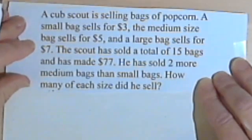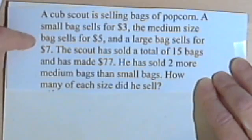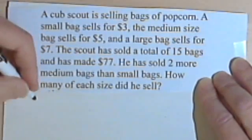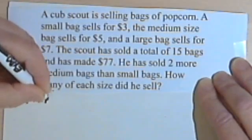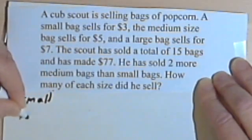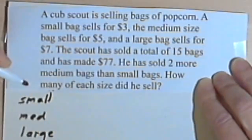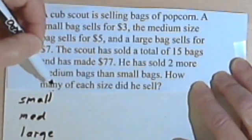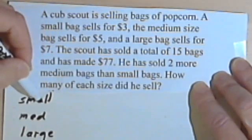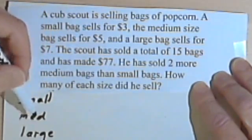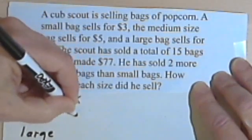Let's copy out the important information so we have it all in one place and don't have to search through the paragraph for it. So we know there are three sizes: small, medium, and large. And the question is asking how many of each size did he sell? Well, if we're looking for the numbers of bags of each size, let's get some variables here. I'm going to use x, y, and z.